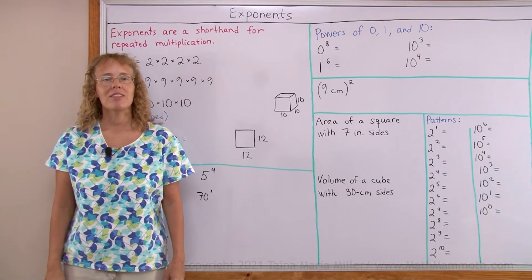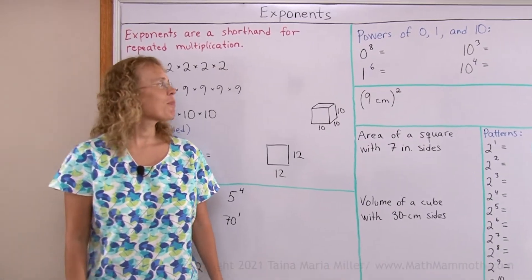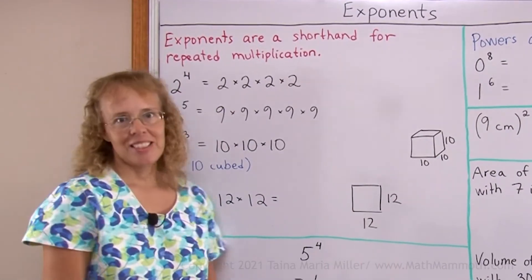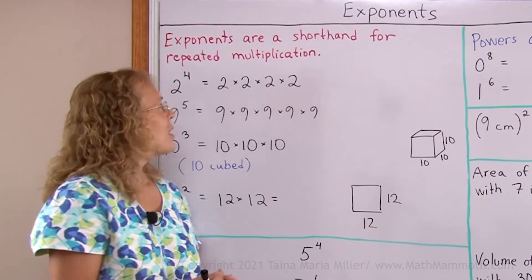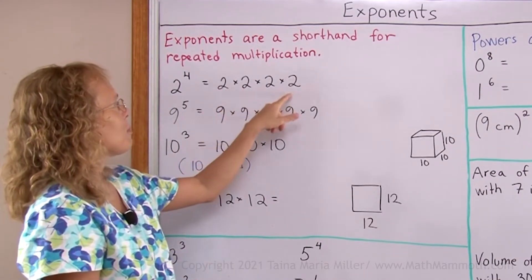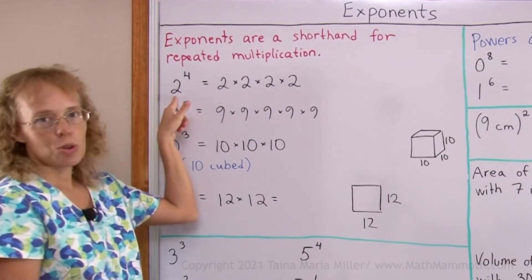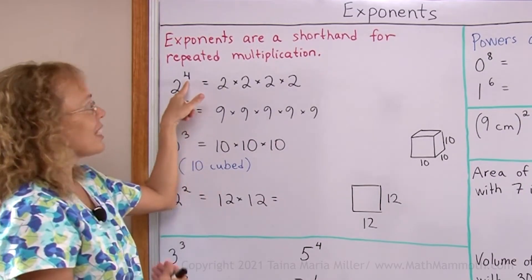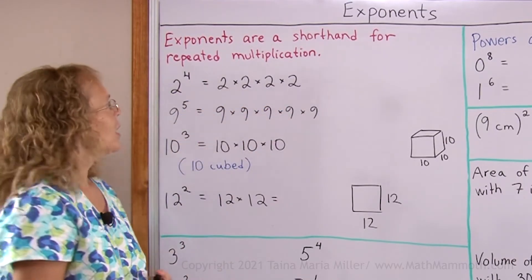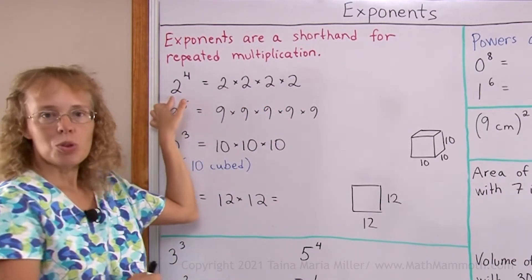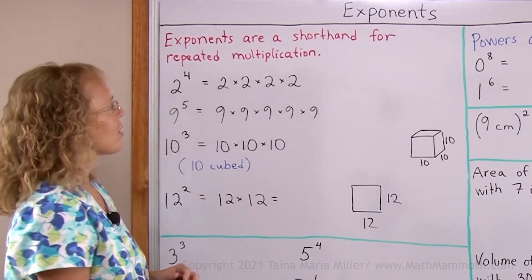Hello, my name is Maria Miller from mathmammoth.com. In this video we're going to study exponents. Exponents are a simple concept because all it is is a shorthand for repeated multiplication. If you have the same number multiplied many many times, there's a shorter way to write it. We have two as a base number and four is the exponent. The exponent tells us how many times two got multiplied by itself. We read this as two to the fourth power, or sometimes just two to the fourth.